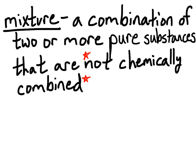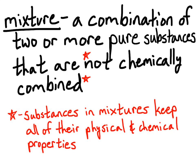Now, when we say that they are not chemically combined, that gives us some information about mixtures: substances in mixtures keep all of their physical and chemical properties. Therefore, we could also say they keep their identity. So substances that are in mixtures, while combined together physically, do not actually combine together chemically. Their identity does not change.